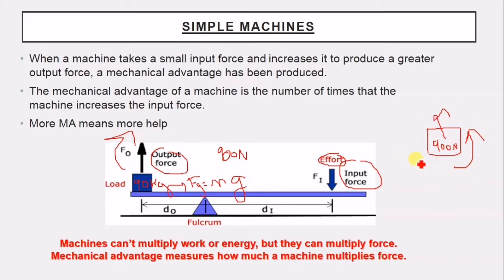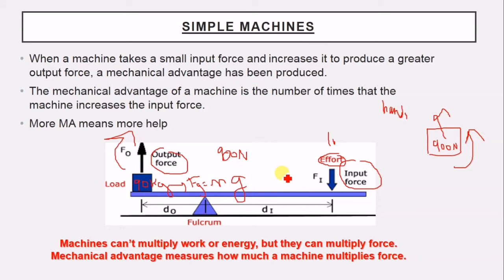To lift it using hands only, you must apply at least 900 newtons. But using this lever, maybe 10 newtons or 100 newtons are enough to lift this object, because this simple machine magnifies and increases the force. It does this job by changing the distances.